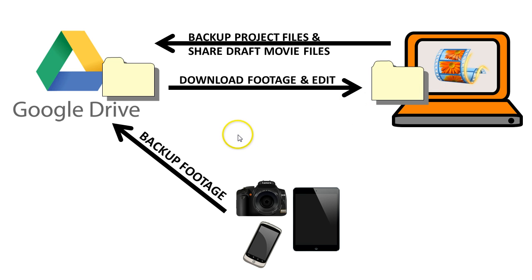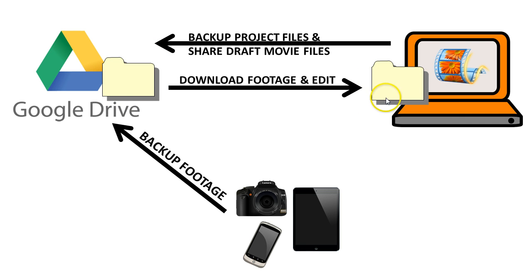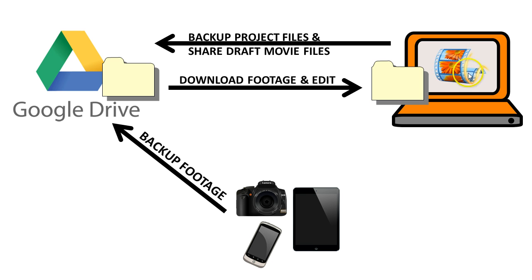For each video you produce, you want to maintain a set of folders — one on Google Drive and one on your computer's local C Drive. You'll have copies of your files in both places but will perform slightly different activities in each folder. Your Google Drive folder is for backup and sharing drafts as you go along, and your local C Drive is for editing in Windows Movie Maker.